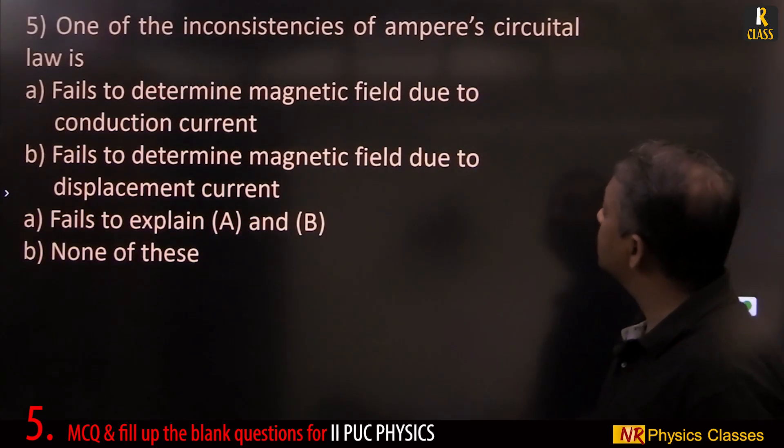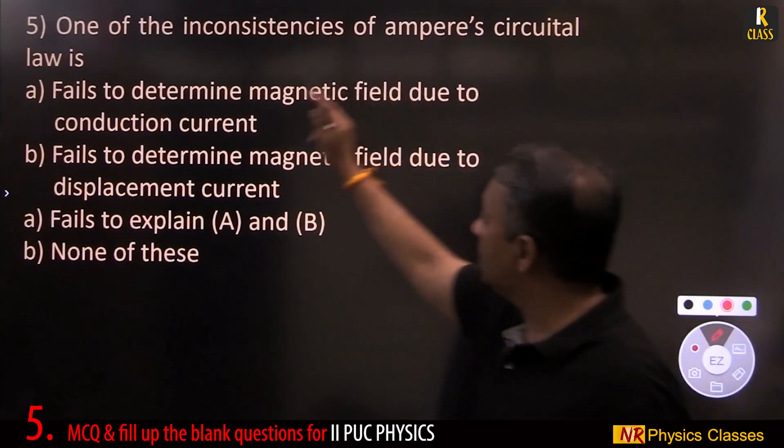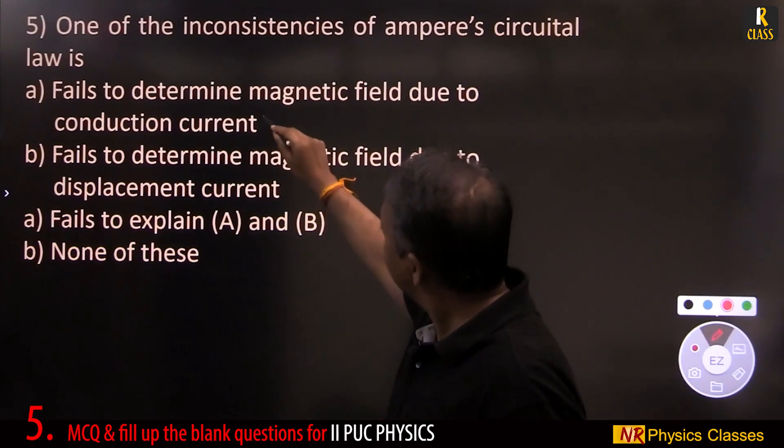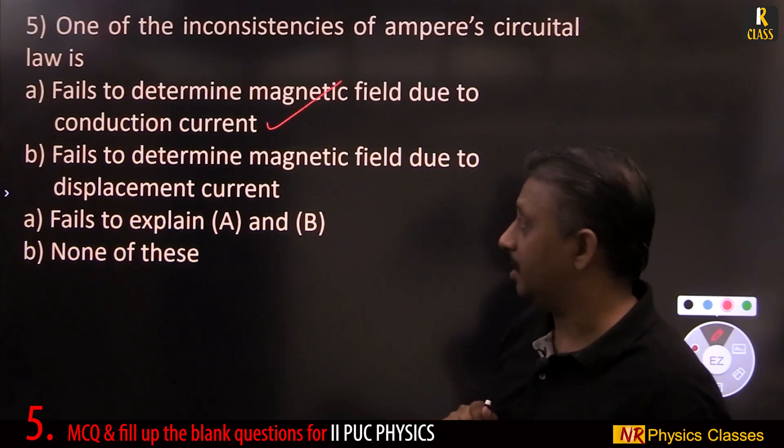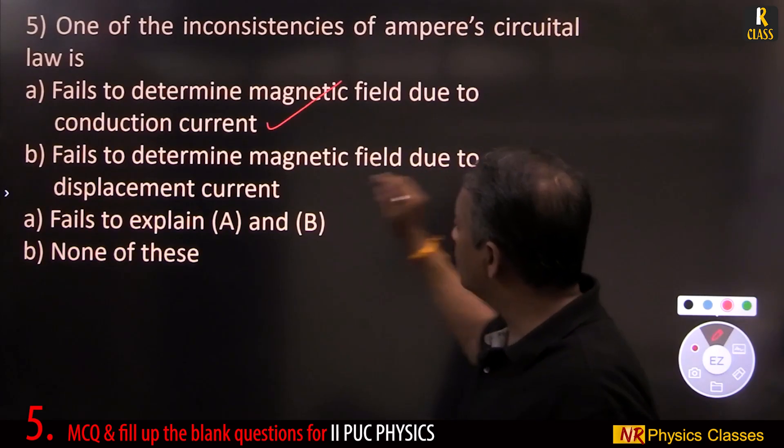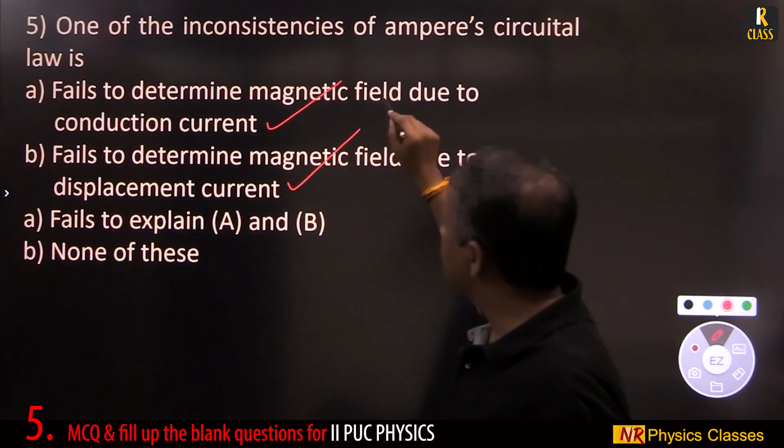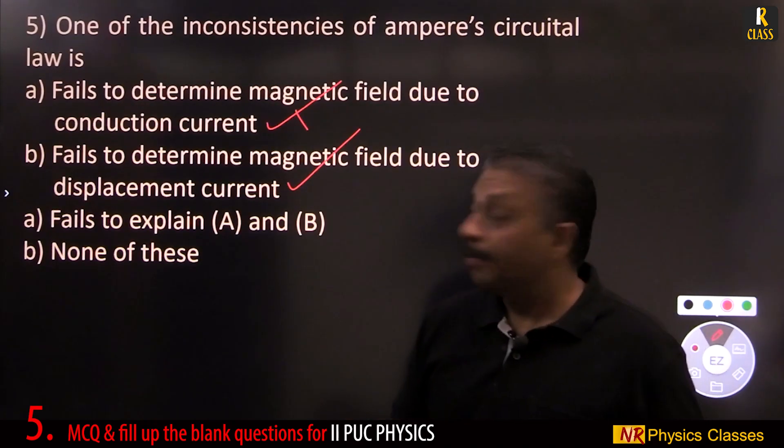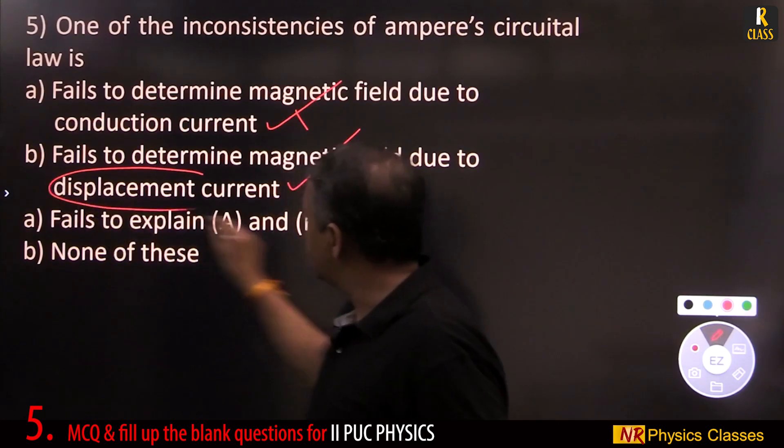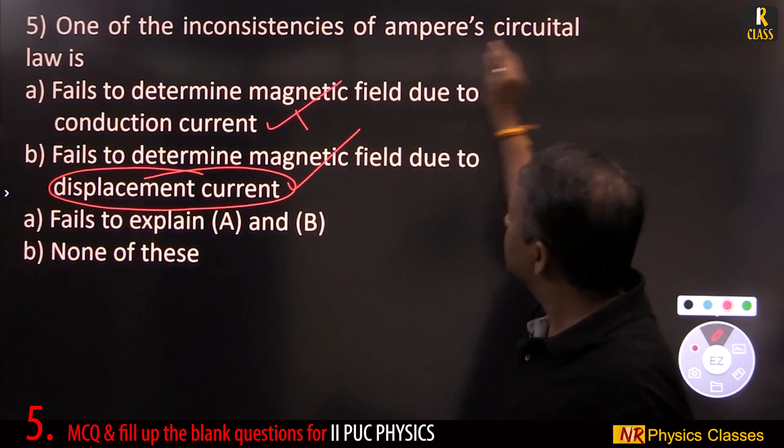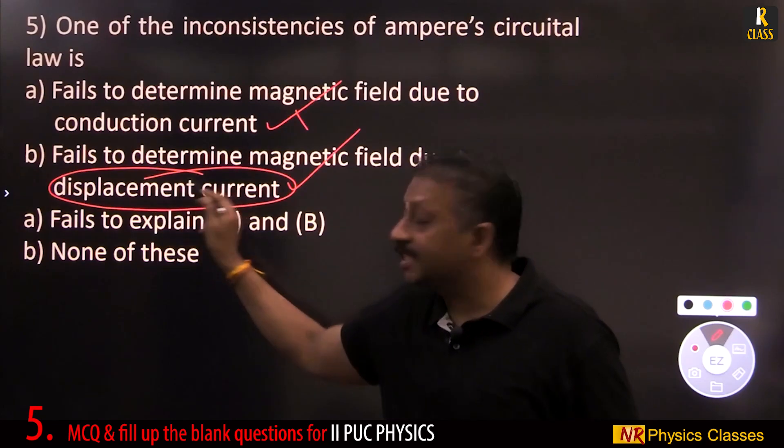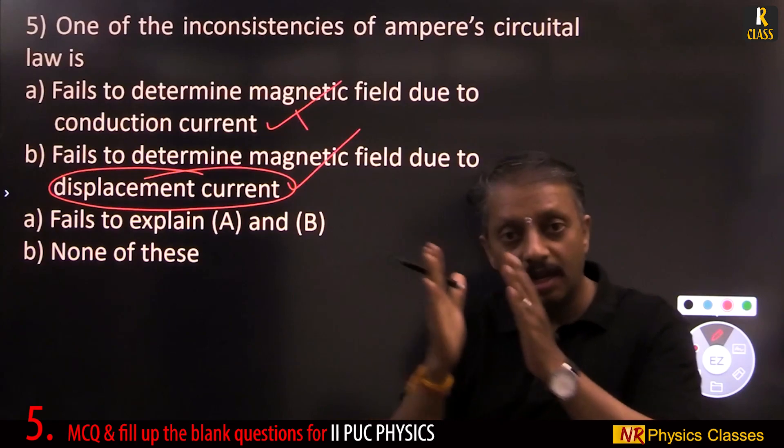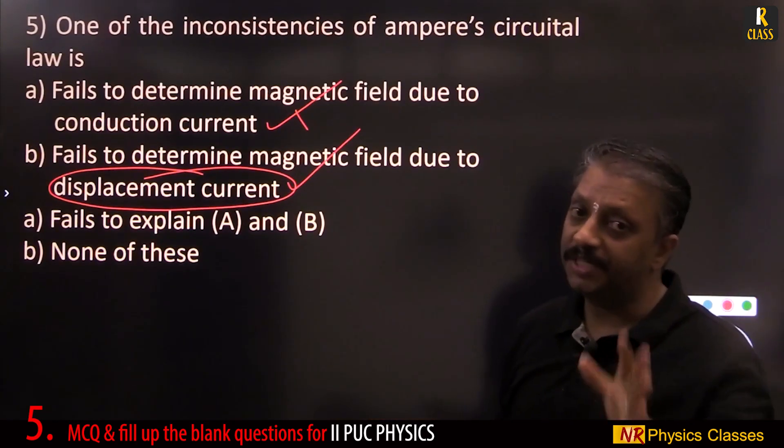One of the inconsistencies of Ampere-circuital law is it failed to determine magnetic field due to displacement current. It explained magnetic field due to conduction current but failed to determine magnetic field due to displacement current. Ampere-circuital law did not consider displacement current, it only considered conduction current. Maxwell-Ampere-circuital law considered displacement current.